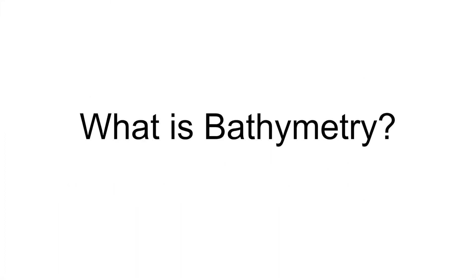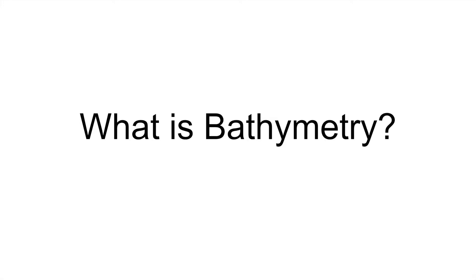So what is bathymetry? Bathymetry is the underwater equivalent to topography — it is the study of lake and ocean floors and their depths. Similarly to how topography maps can be seen with each ring representing a different height, bathymetry maps are often shown using the rainbow color spectrum in addition to the rings to show the various depths of bodies of water.